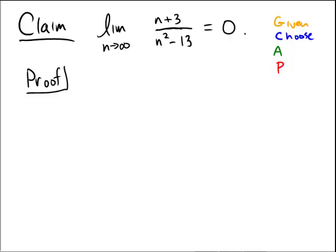Given, Choose, Assume, and Prove. And so the general process is first, in orange, we have to be given. So we let epsilon greater than 0 be given.